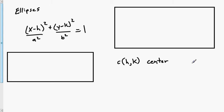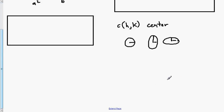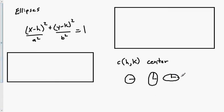Remember what an ellipse is. A circle is the same distance all the way around — we have a radius that is the same all the way around. An ellipse has different distances on the x and the y. It can be either tall, like this first one, or it can be fat, like this second one.